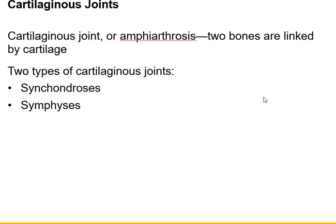The tibia and fibula are much less mobile. Moving on to the third type of joint — cartilaginous joints. Whenever you see the word cartilage, just think gristle, because that's pretty much what this is. These are amphiarthroses — you can have the tiniest bit of motion, a little more than with fibrous joints. Two types of cartilaginous joints are synchondroses and symphyses.